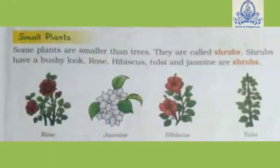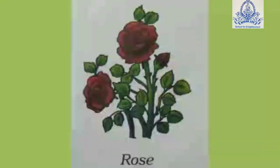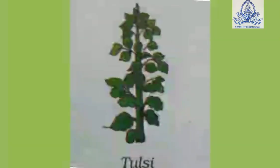Small Plants: Some plants are small but strong. Such plants are called shrubs. For example, rose plant and tulsi plant.